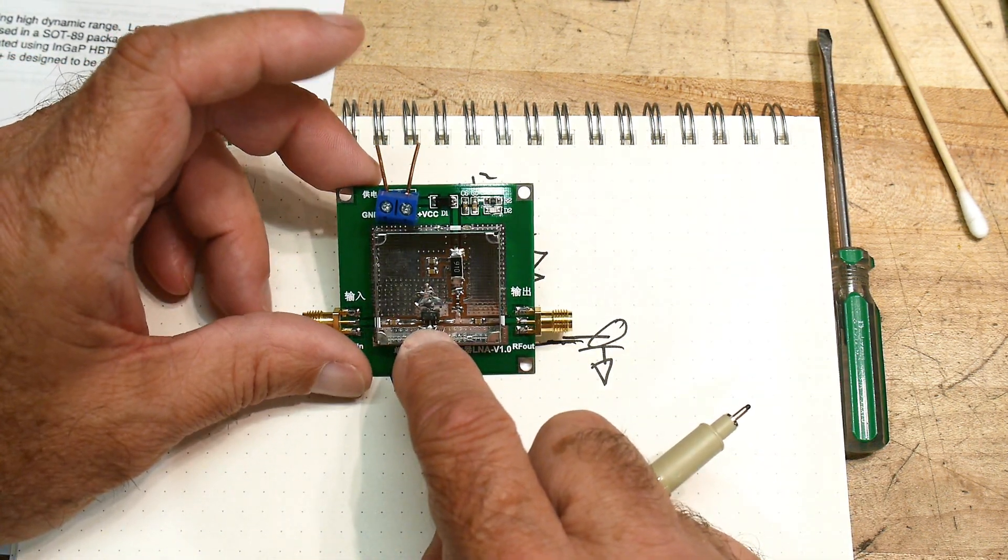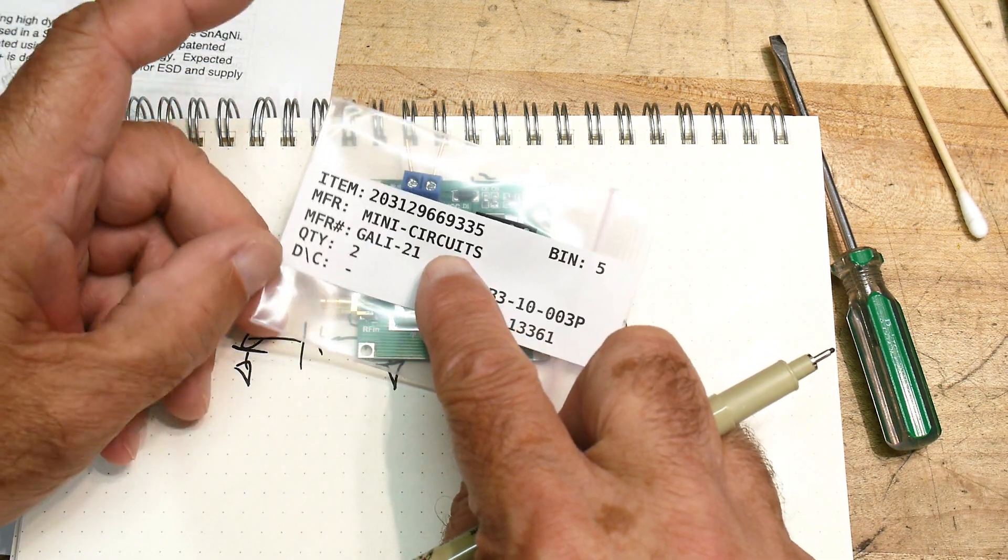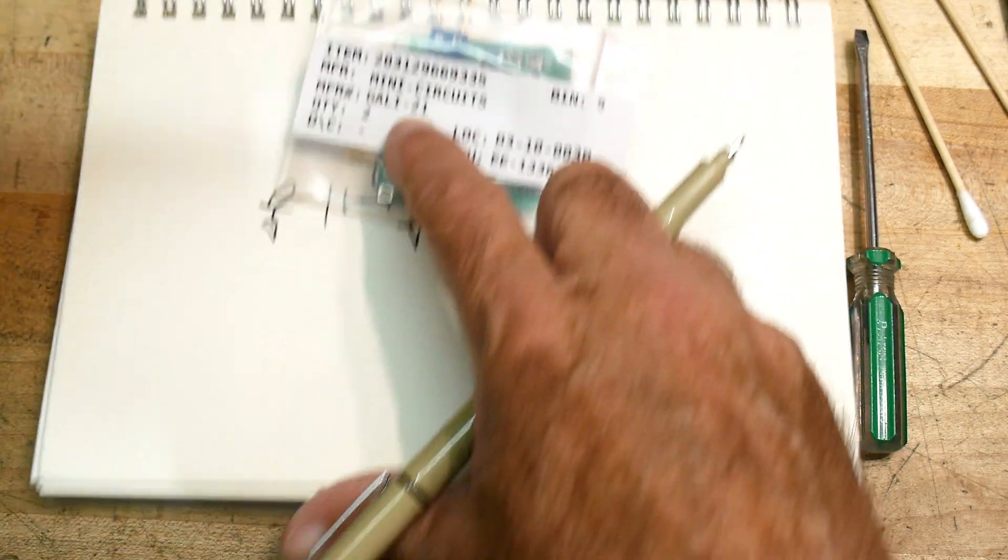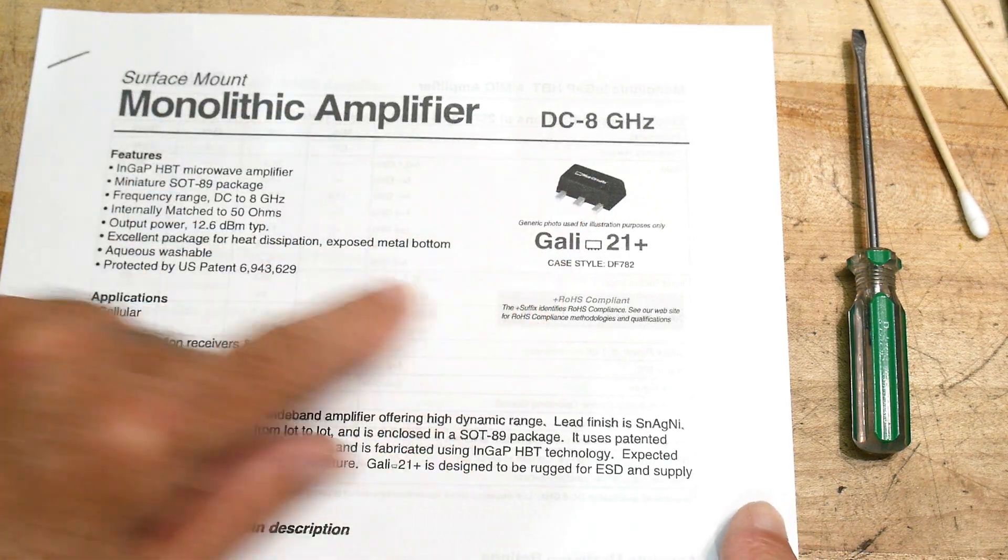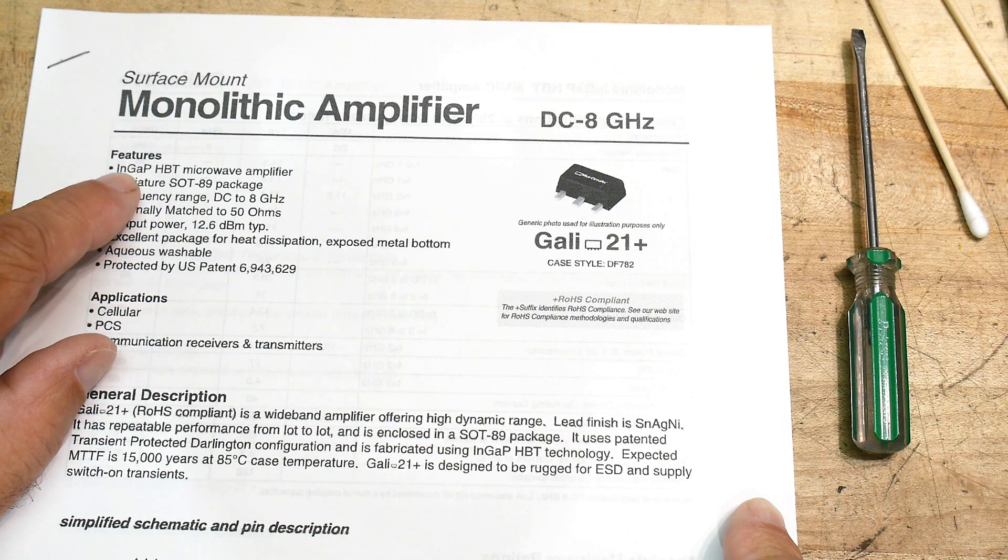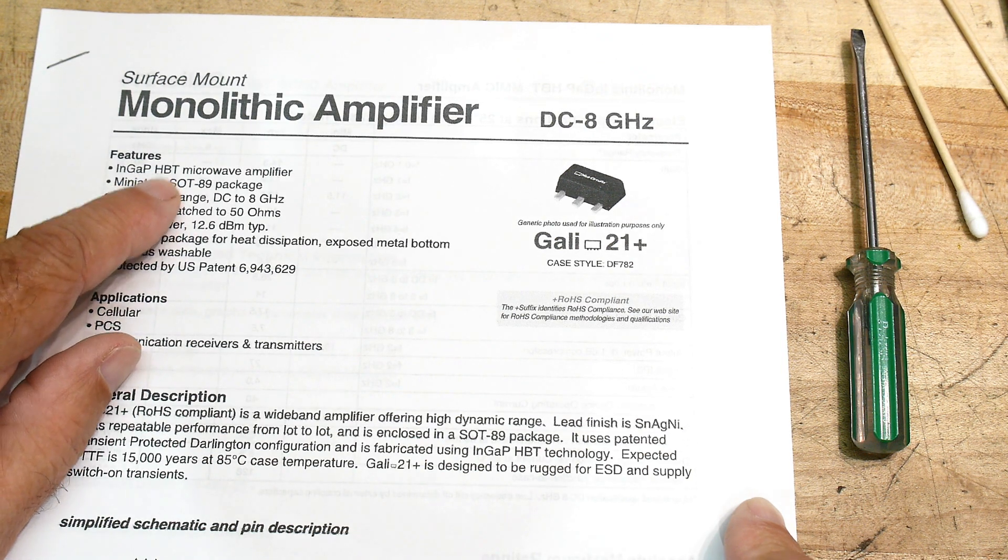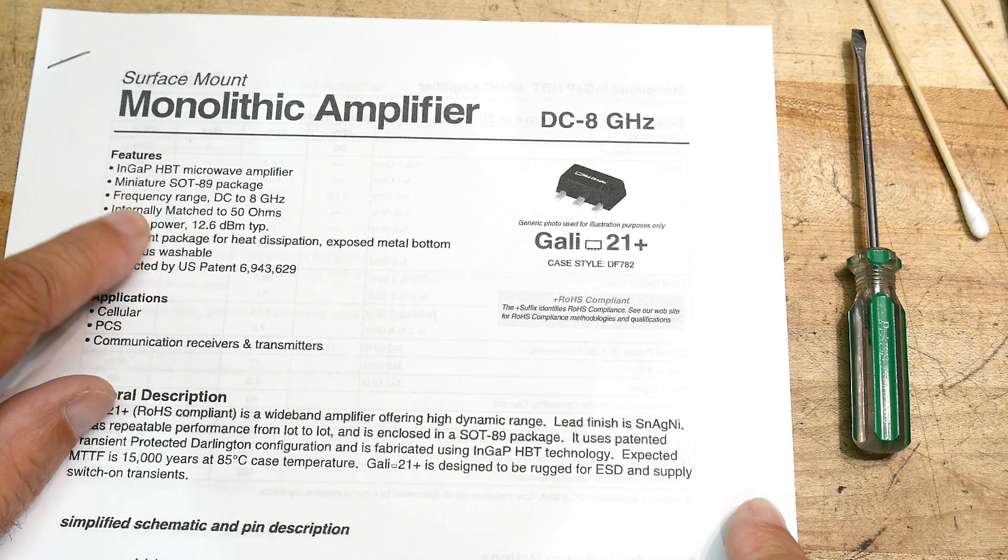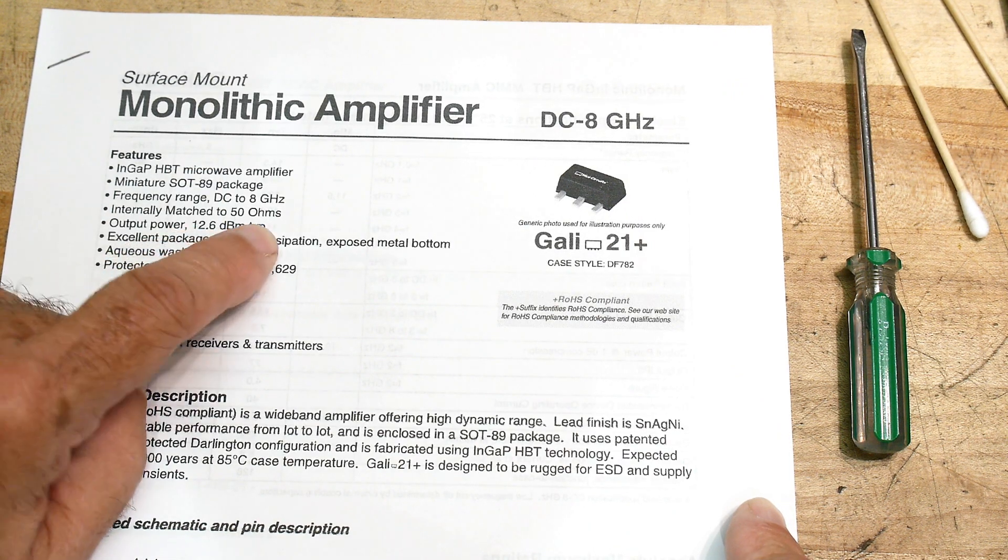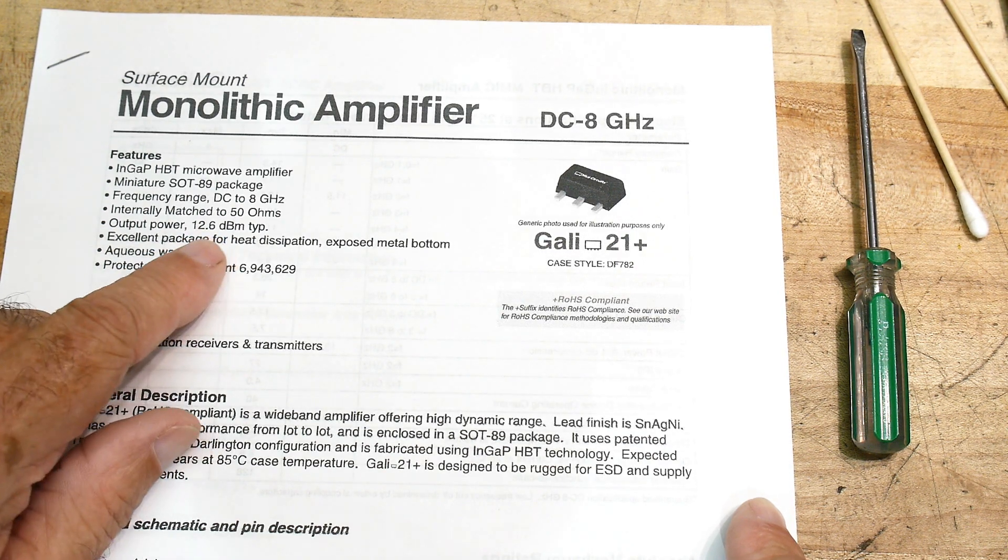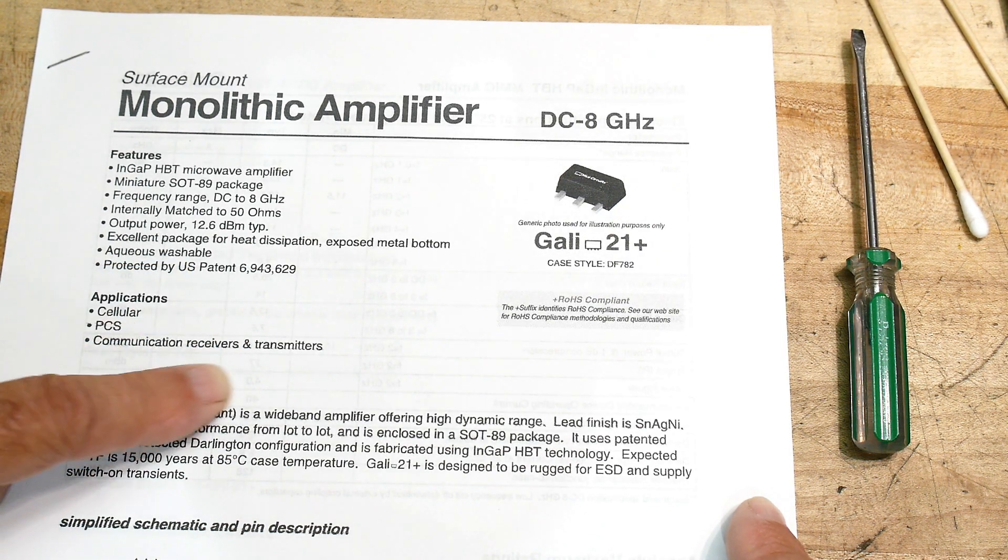And this little guy here was probably some cheapo Chinese thing. And I found some guy on eBay who had official mini circuits. Now these little guys, the GALI 21s, let's take a look at the datasheet for the GALI 21s. DC to 8 GHz, check this out. It's an InGaN Gallium Phosphide HPT. I'm not sure what that stands for. Anyway, frequency range of 50 ohms plus 12 dBm output power, probably that's the 1 dB compression point. You can wash it, used for cellular phones and all kinds of stuff.